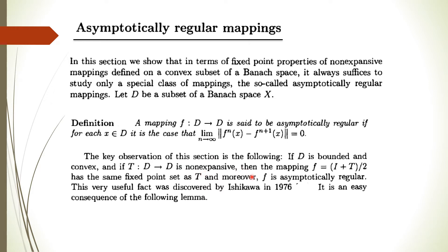Also, f is asymptotically regular, meaning this condition holds. You can verify this by substituting the values of f^n and f^(n+1), which come out in terms of T^n and T^(n+1), and we can show that this is asymptotically regular.